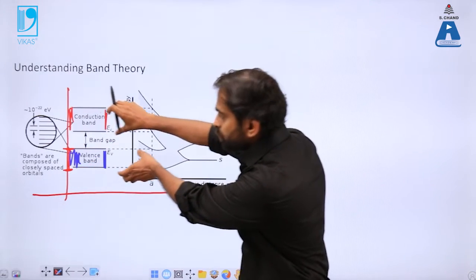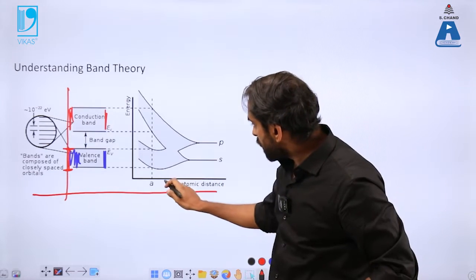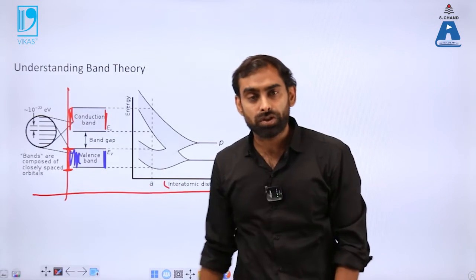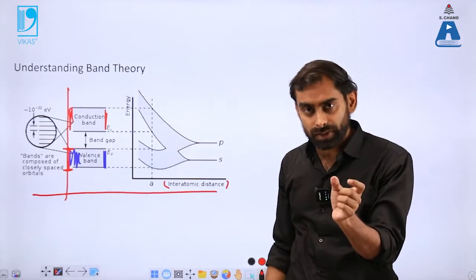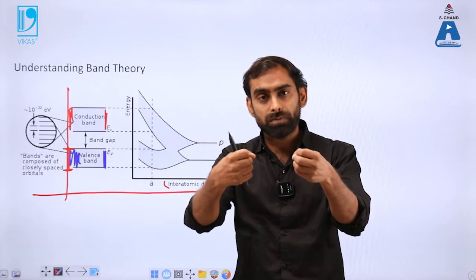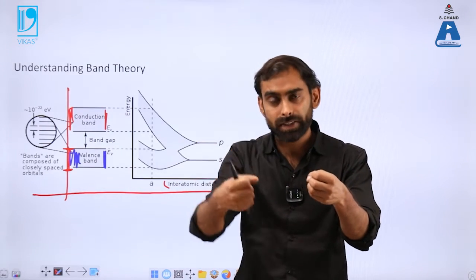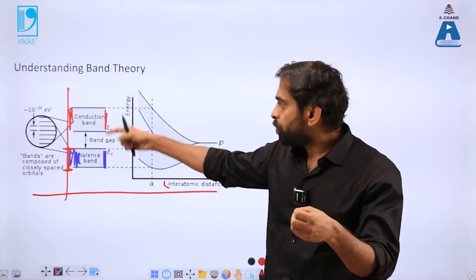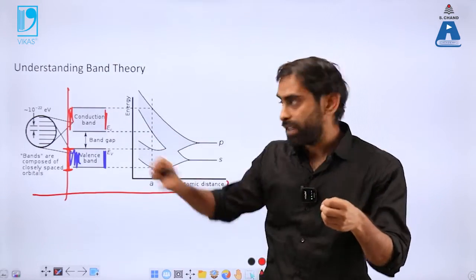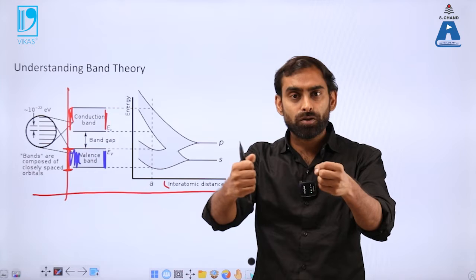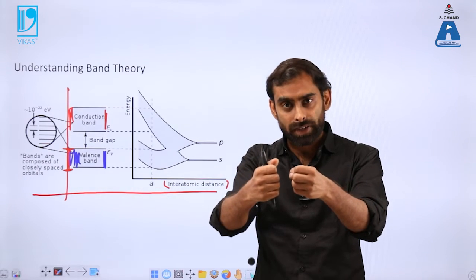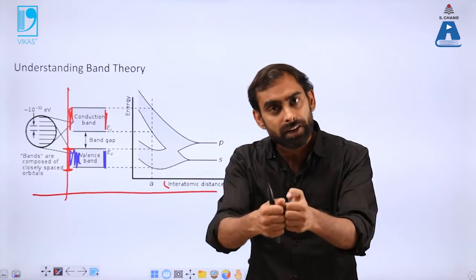This band is not uniform. If you look at the x-axis representing inter-atomic distances - suppose two atoms are this far in a lattice, then these two bands will be at a different distance. If you bring atoms closer in the lattice, and when they become very close and their atomic orbitals begin to coincide or partially overlap.